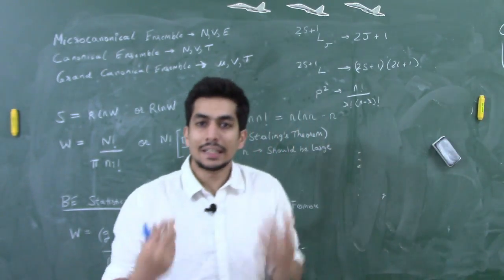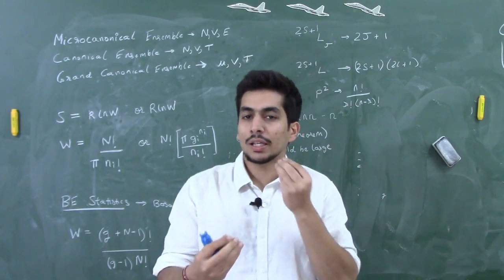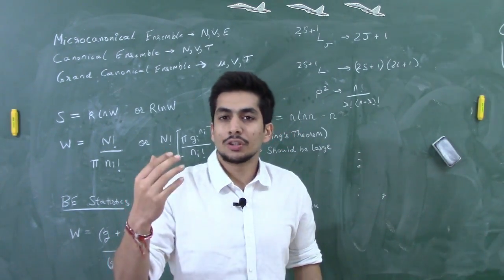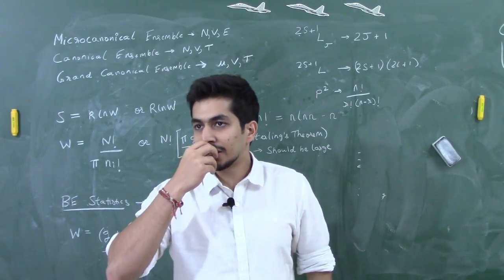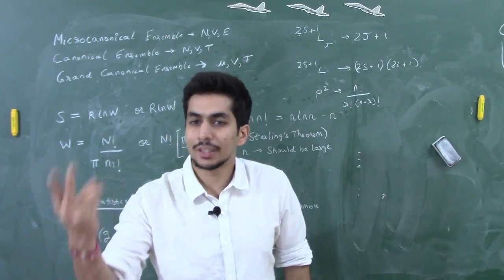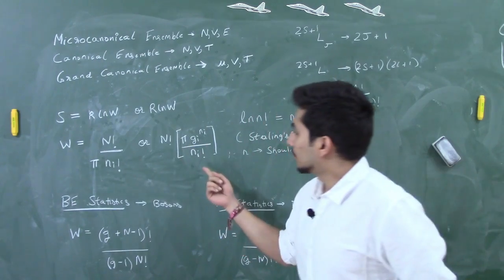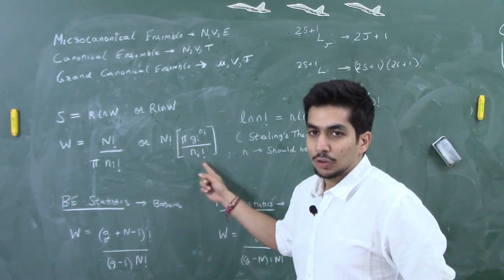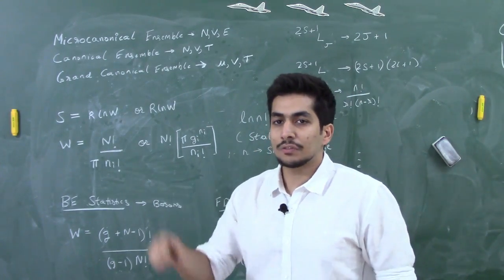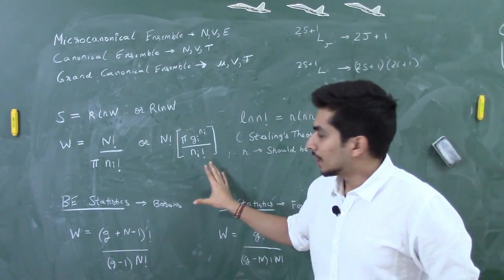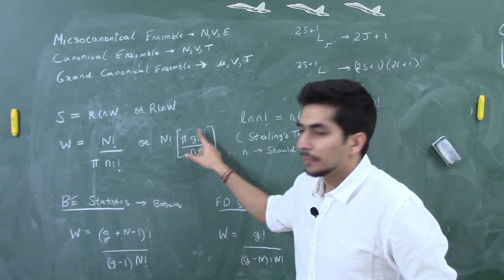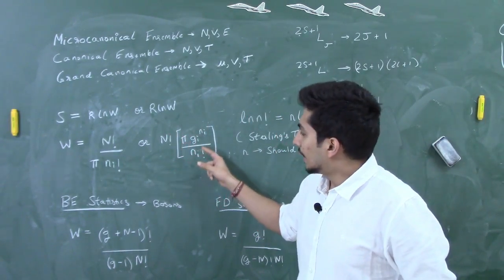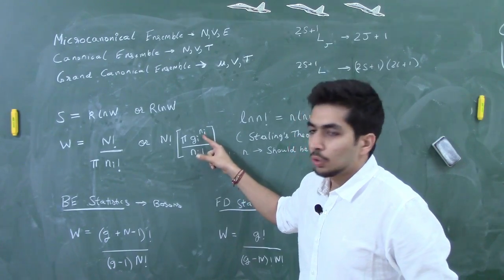When degeneracy is given for a particular energy level — for example, the first excited state has degeneracy 3 — the formula becomes: N! × ∏(gᵢ^nᵢ / nᵢ!), where gᵢ is the degeneracy and nᵢ is the number of particles in that level. This introduces the degeneracy term into the microstate count.